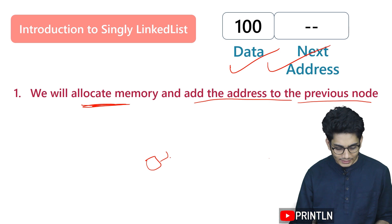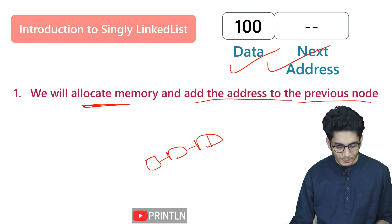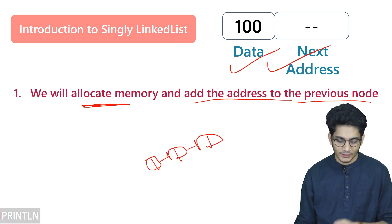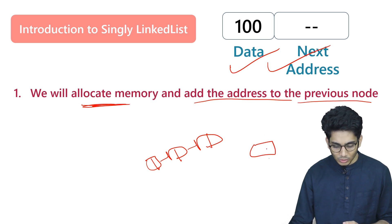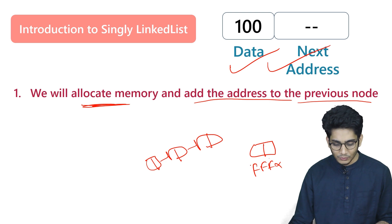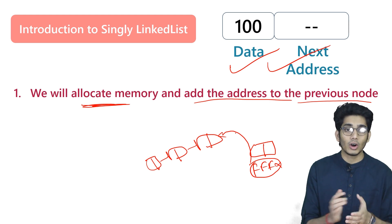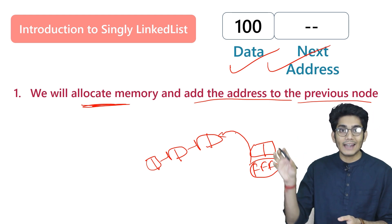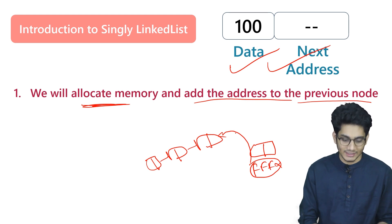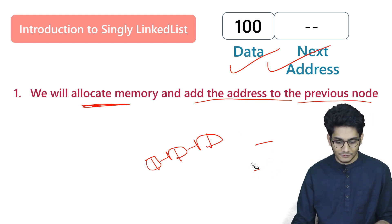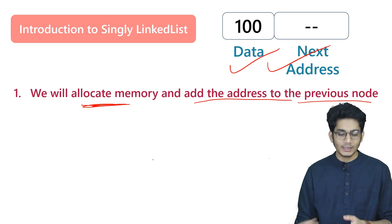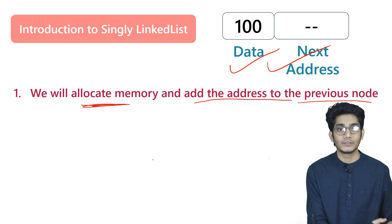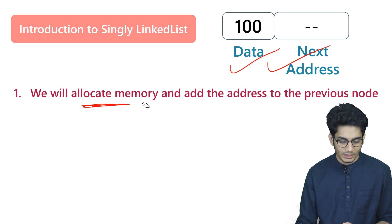Let's say we have a list with two parts — data and address. We'll allocate a node, say at address FFF0. Then we'll store this address in the next address portion of the previous node, or the last node of the list. This is how we can add or attach a block into a singly linked list — first you create a block, then you add it to the previous node.